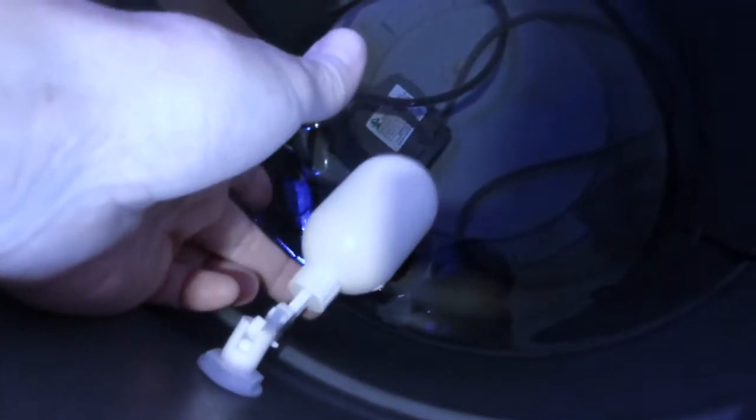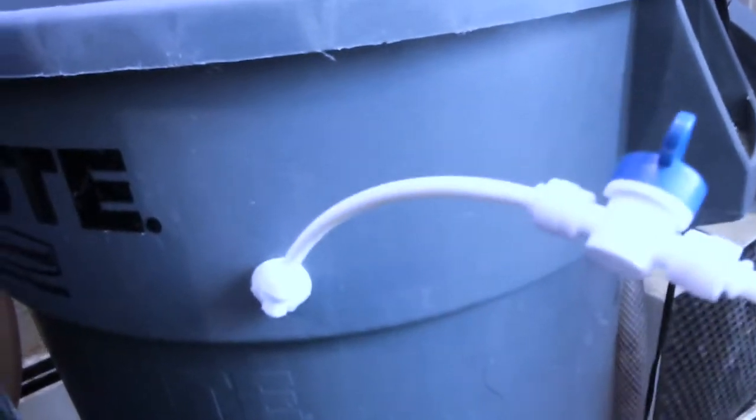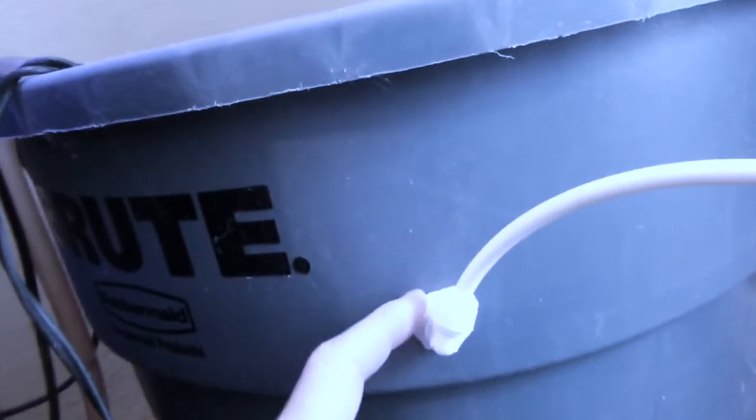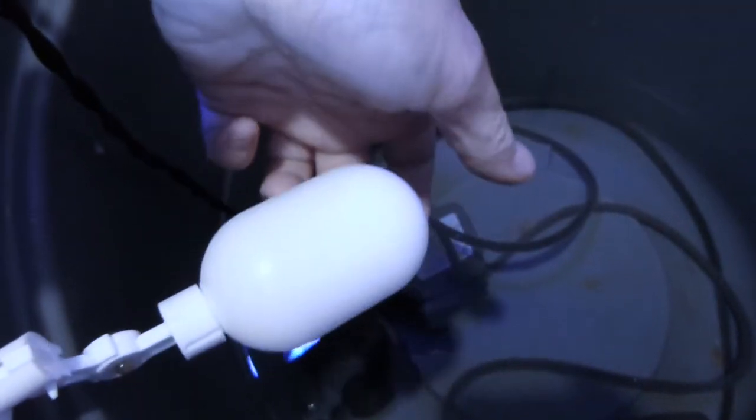Today I want to talk about float valves. This is a float valve for my RO line. My RO line comes in through a little hole in the bucket, and this float valve will automatically shut off when the water level gets up to here.